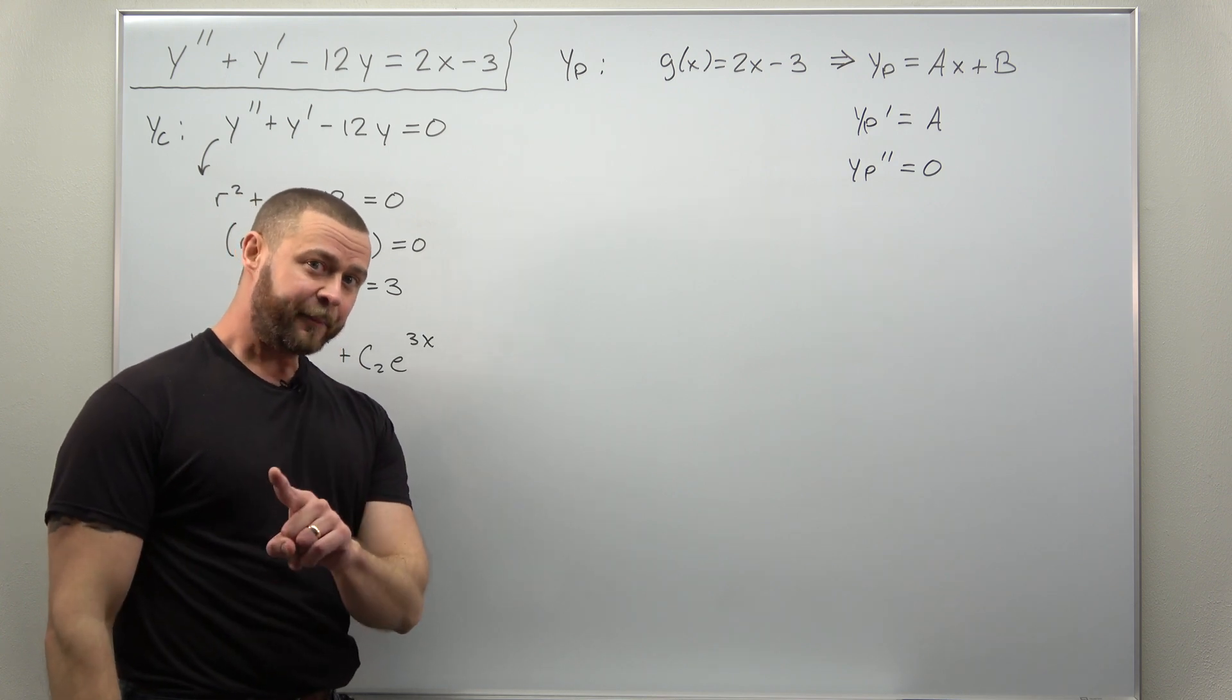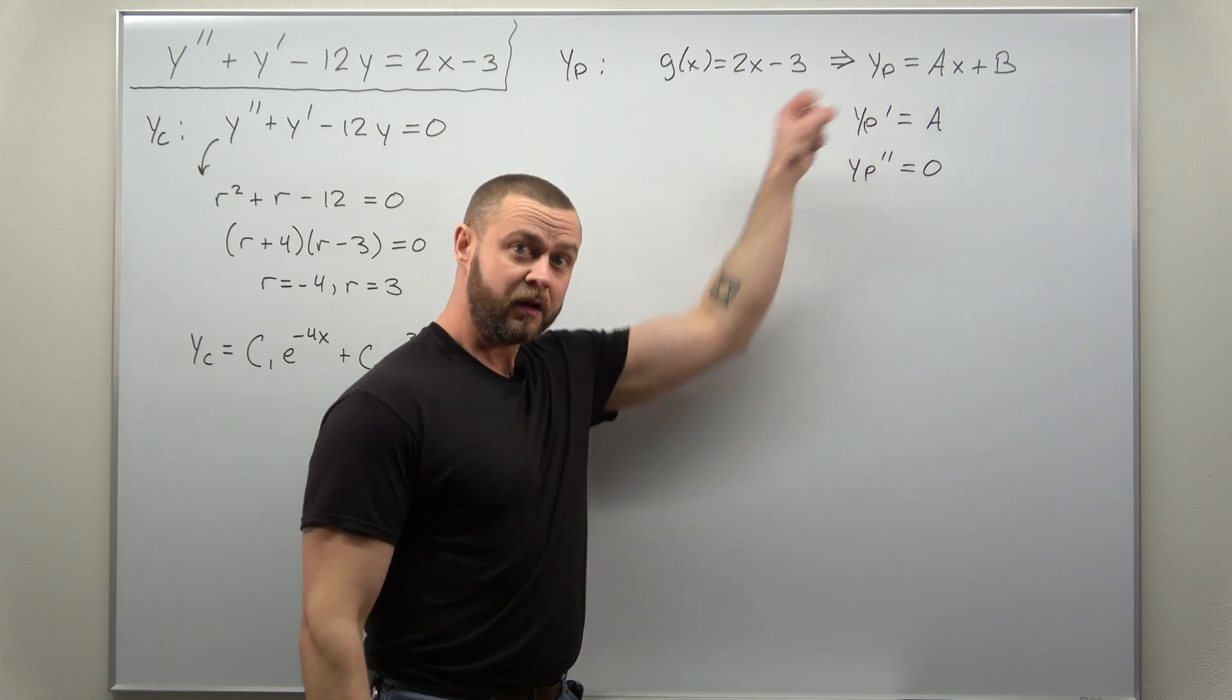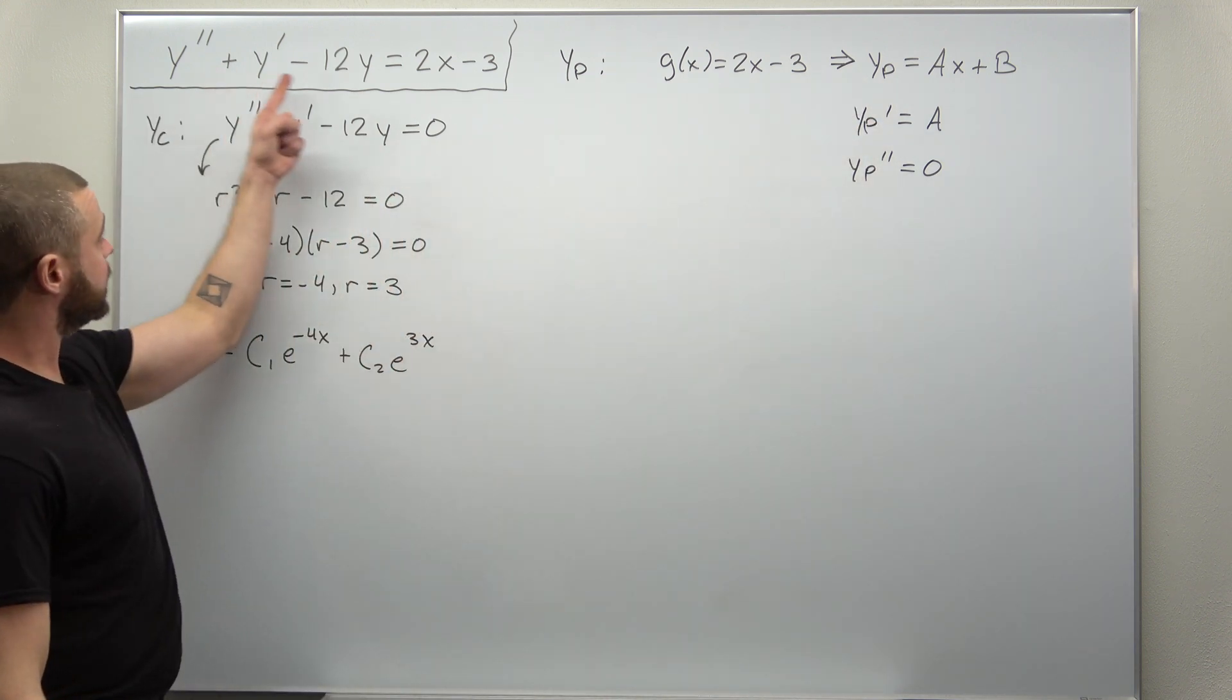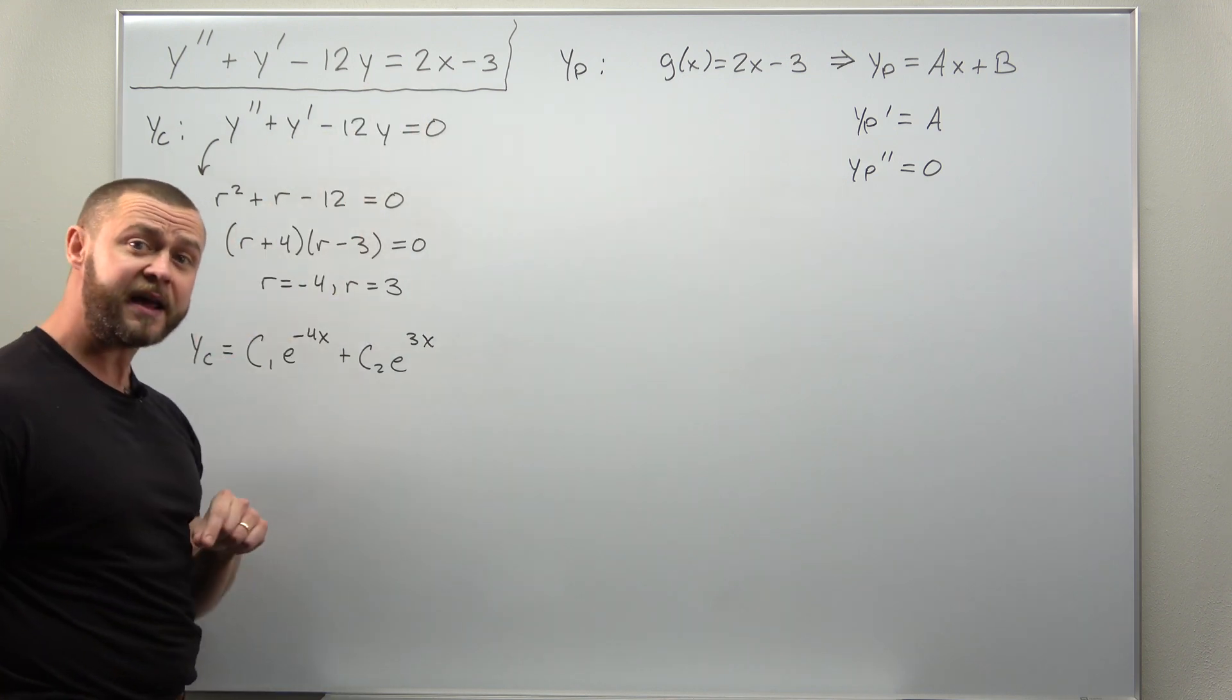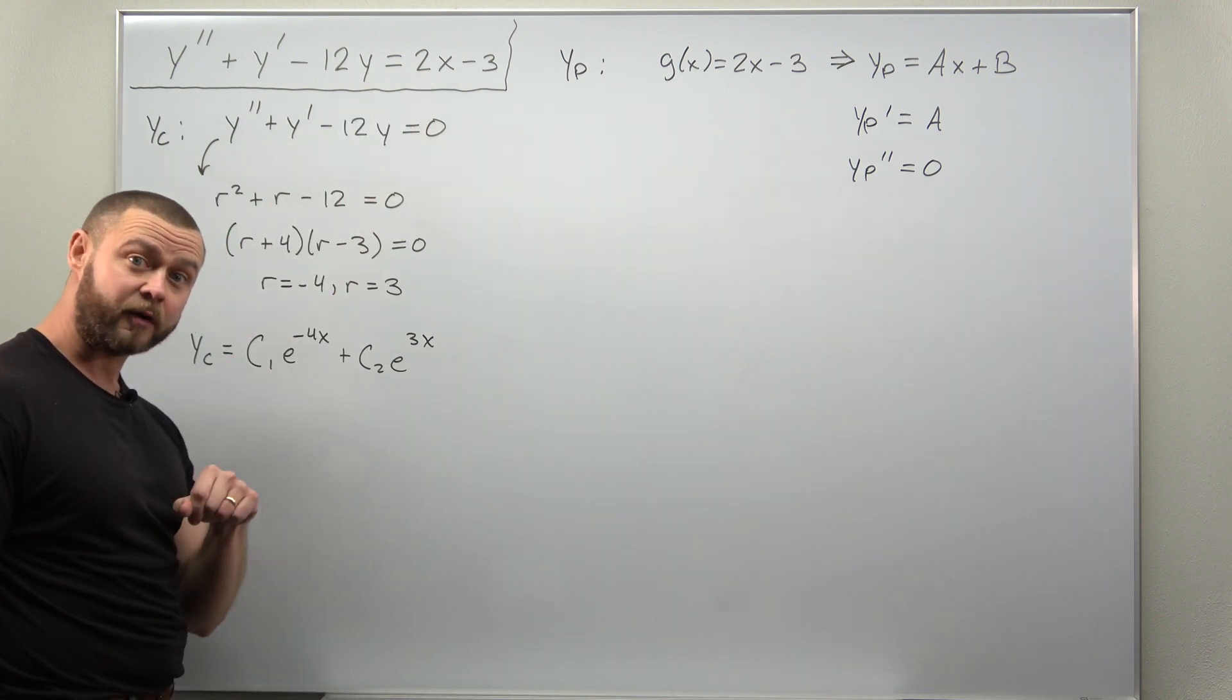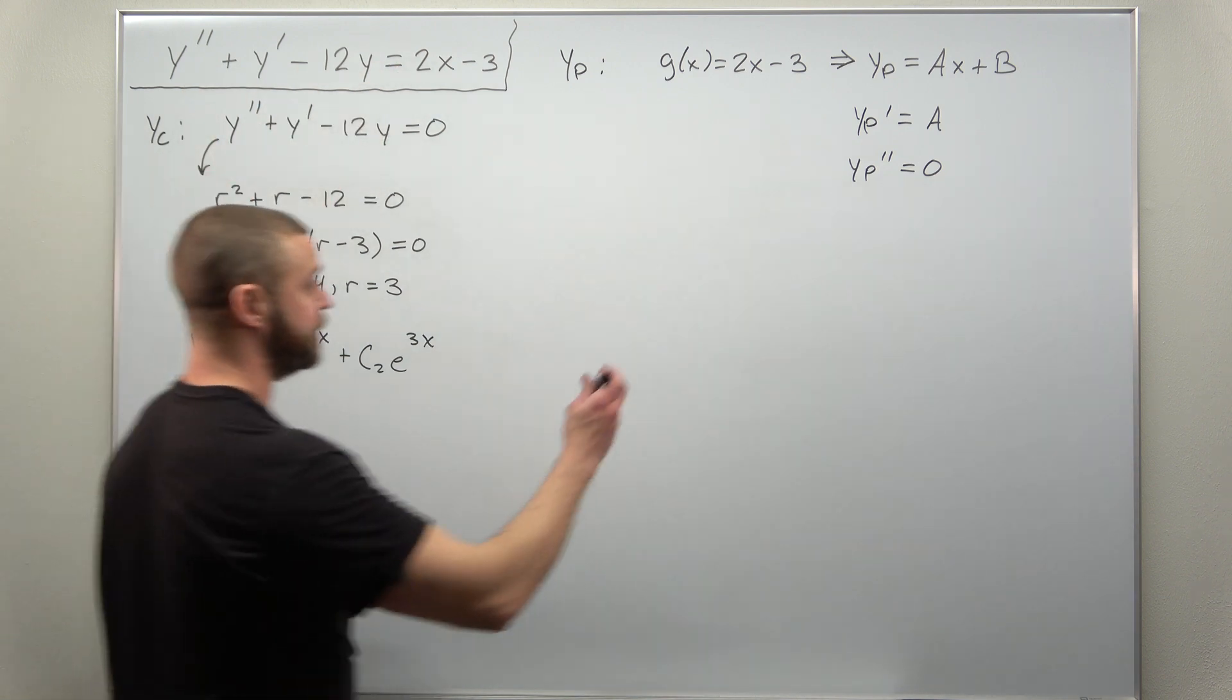Now what we want to happen is we want the particular solution such that when we plug it into the non-homogeneous ODE, we should get 2x minus 3 left over.